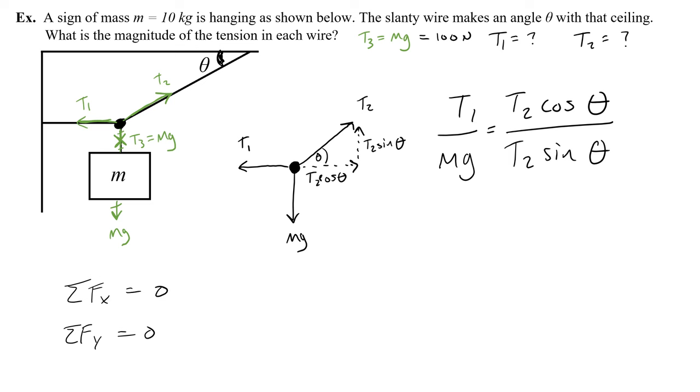Doing this gives me T1 over mg equals T2 cosine theta over T2 sine theta. Why would I do that? Because T2 cancels out. And now I get T1 over mg equals cosine theta over sine theta, which is cotangent theta, in case you don't remember. You could leave it as cosine over sine. It's fine if you don't remember that cosine over sine is cotangent. And then to solve for T1, it's really easy. T1 is just mg times cotangent of theta because you multiply mg to both sides.